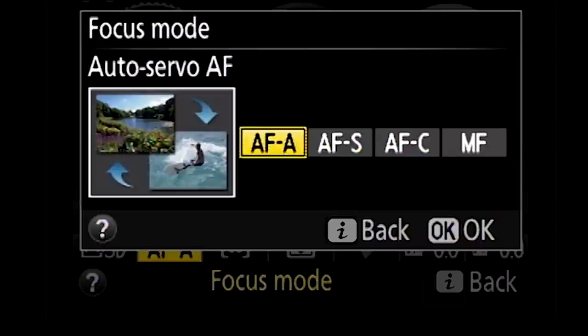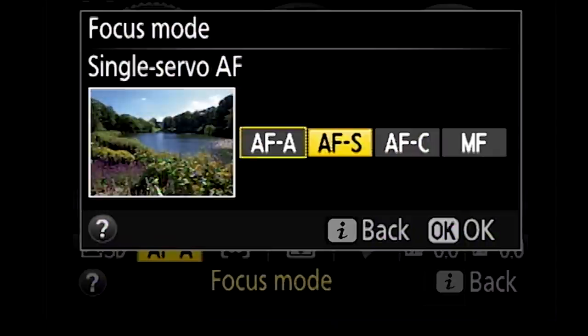We're going to move to the focus mode selector which is the second from the far left on the bottom, and when you press OK it's going to take you into a menu and you're going to see four different focus modes. Now the good thing about this is there's really only two focus modes and the camera can switch on or off how it's using either of them.